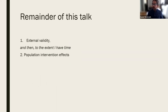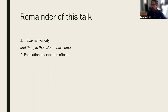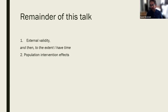For the remainder of this talk I'm going to cover these two big ideas: external validity and then population intervention. I'm already almost 20 minutes into my 50 minutes, so I may not finish it all. If anyone is interested I can discuss more in questions or provide resources. This is also briefly covered in chapter nine of the textbook.